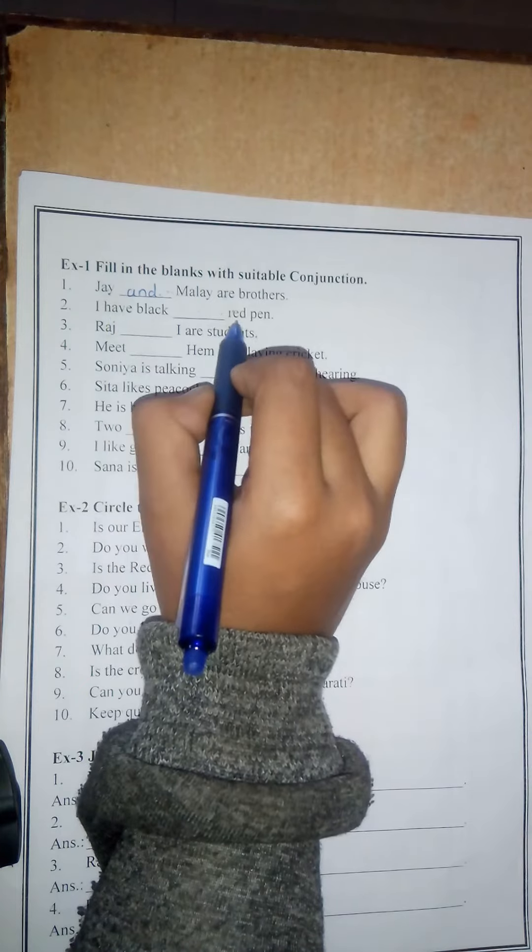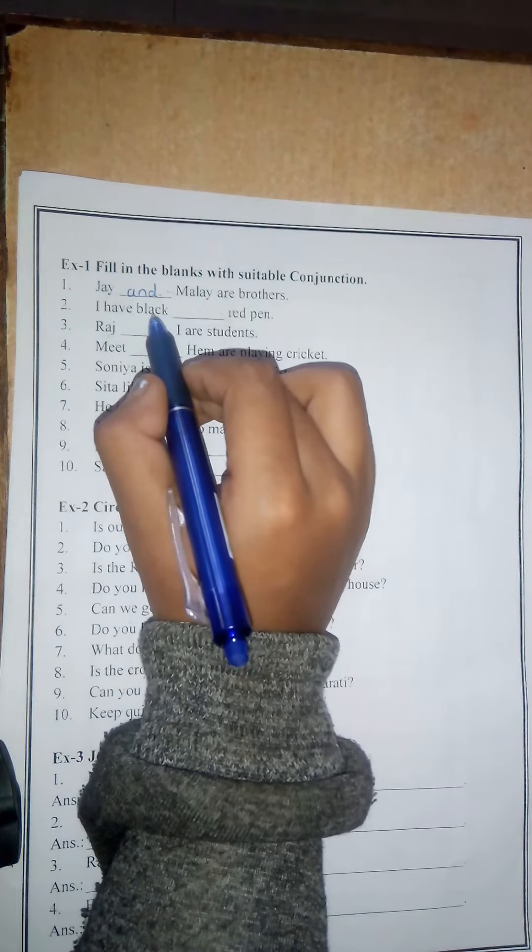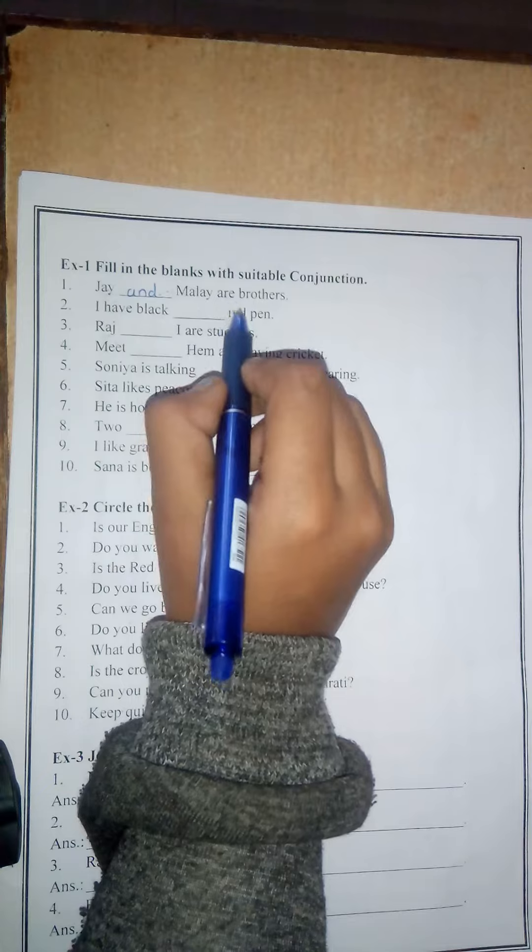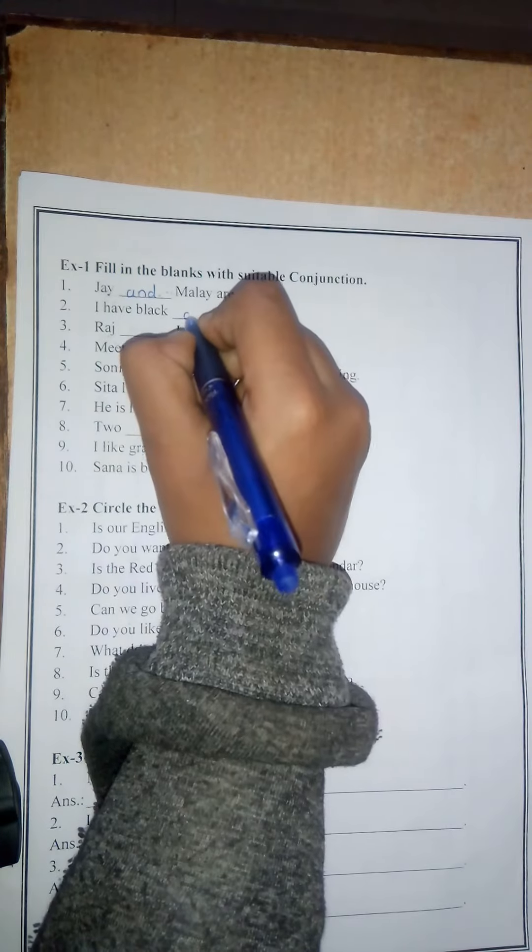Number 2: I have blank blank red pen. Here also similar colors are there - black and red. So we have to use 'and'. I have black and red pen.